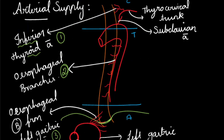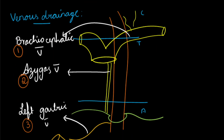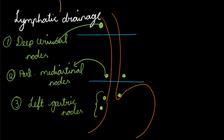The esophagus divides into cervical, thoracic, and abdominal parts. Arterial supply: cervical part by inferior thyroid artery from the thyrocervical trunk arising from the subclavian artery; thoracic part by esophageal branches of the aorta; abdominal part by esophageal branches of the left gastric artery arising from the celiac trunk. Venous drainage: cervical part by brachiocephalic vein; thoracic part by the azygos vein; abdominal part by the left gastric vein. Lymphatic drainage: cervical part to deep cervical nodes; thoracic part to posterior mediastinal nodes; abdominal part to left gastric nodes.